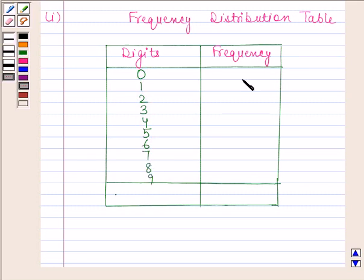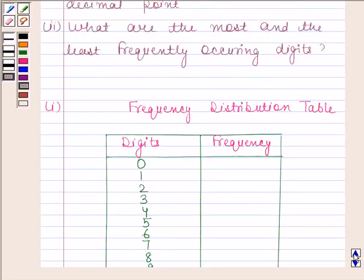In the second column, we will write the frequency of each digit. Now look at the value of pi.